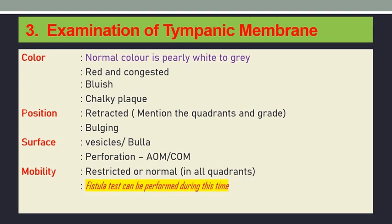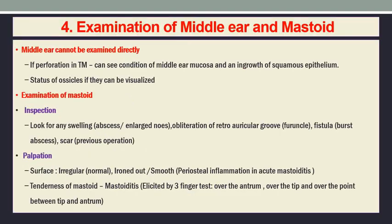The surface is examined for vesicles or blebs in the tympanic membrane. If there is perforation, it may occur in acute otitis media or in chronic otitis media. You have to see for the mobility of the tympanic membrane — either normal mobility or restricted mobility in certain quadrants. You have to quantify the quadrants in which retraction or restriction of movement is present. The fistula test can be carried out at this time, and you can test the results later on.